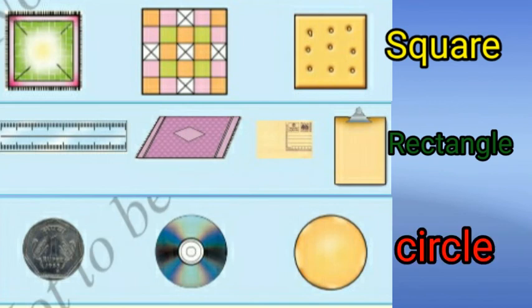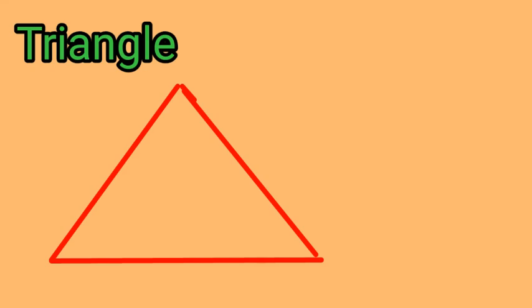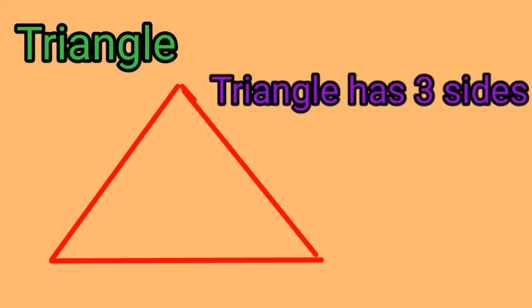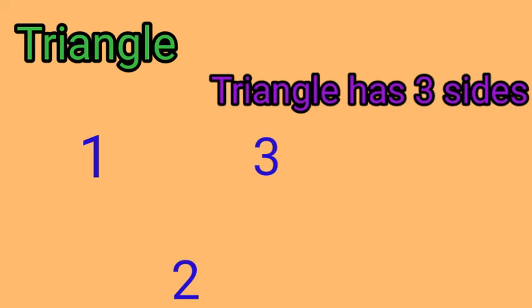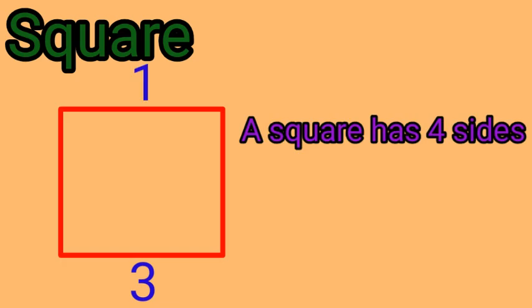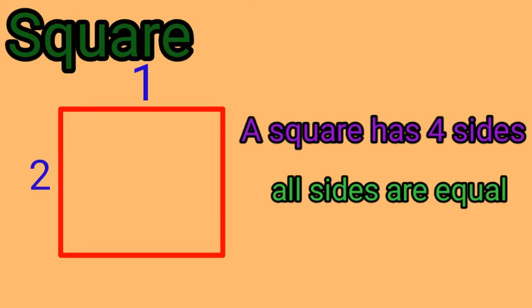Here we learn 2D shapes. First shape: triangle. Triangle has three sides—first side, second side, third side. Therefore triangle has three sides. Square has four sides—first side, second side, third side, and fourth side. Therefore square has four sides and all sides are equal.